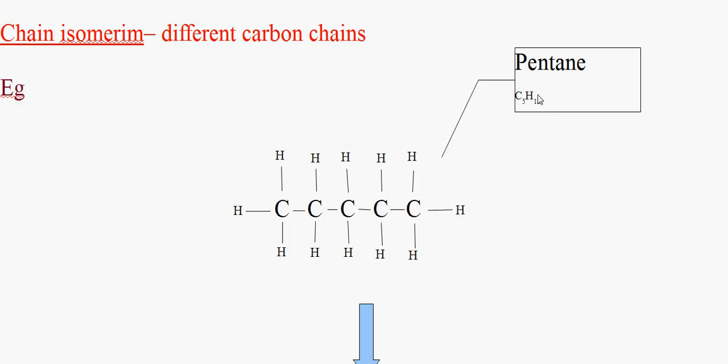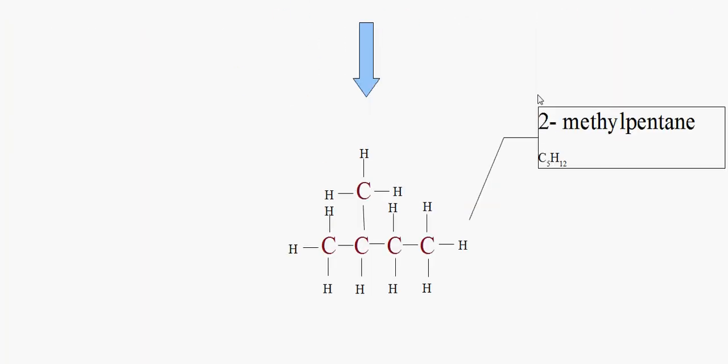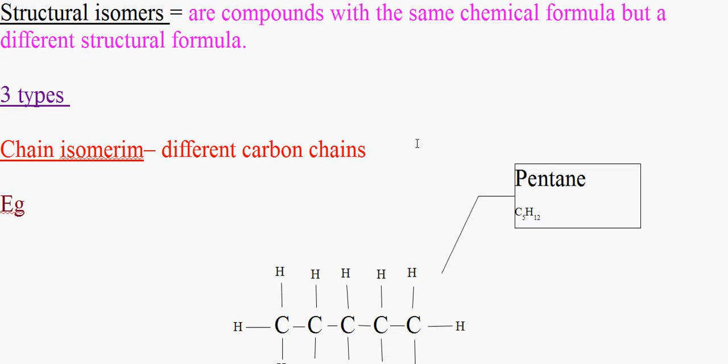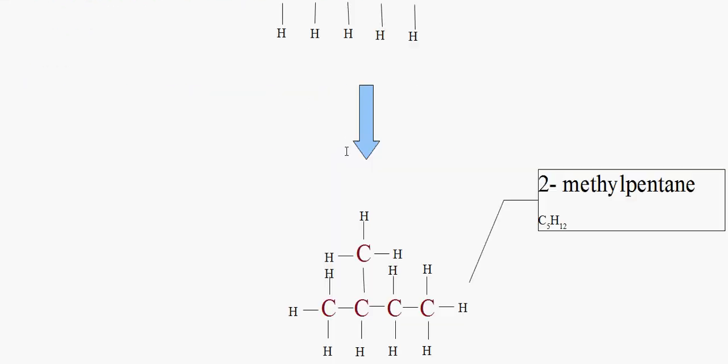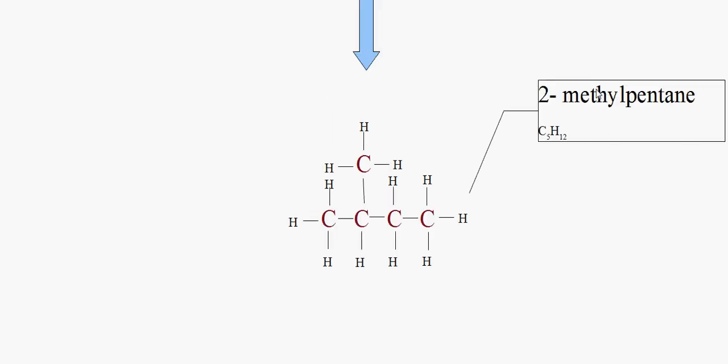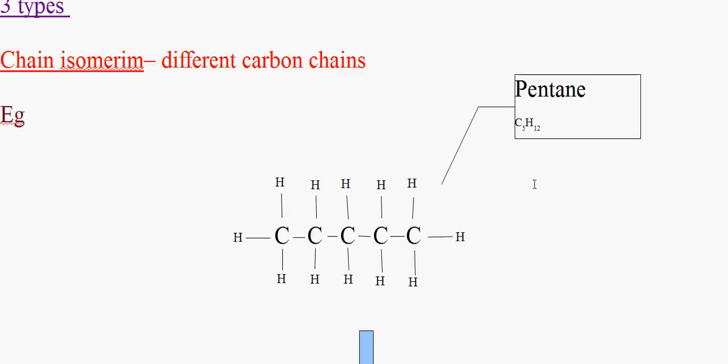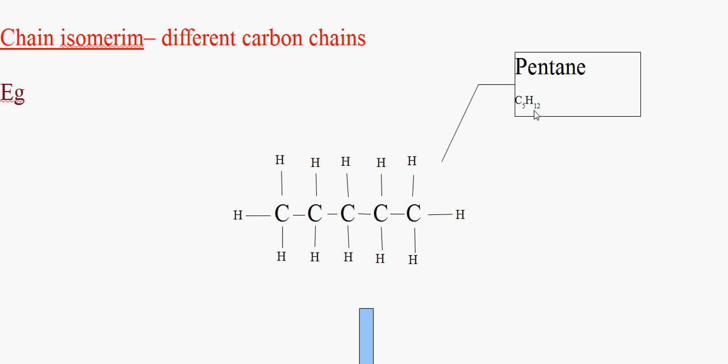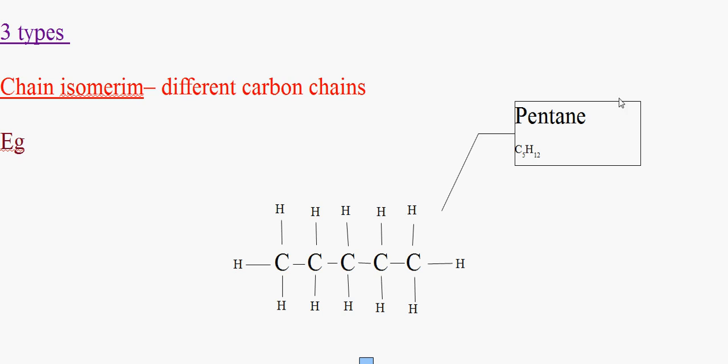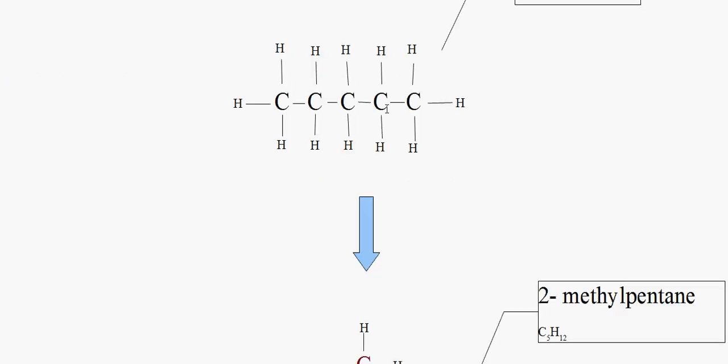but their structural formula is actually different. As you can see, this is branched. It's what's called 2-methylbutane. That's chain isomerism, which is basically the same chemical formula, but different name, different structural formula.